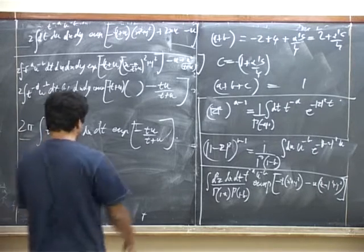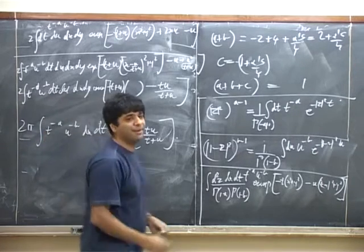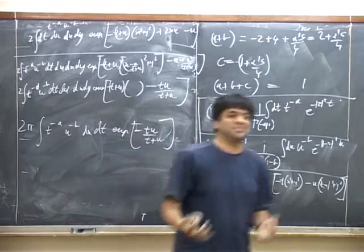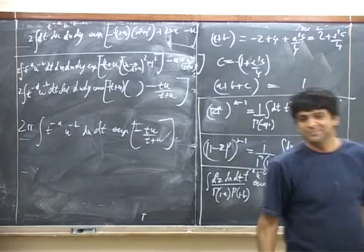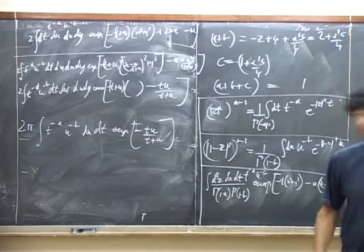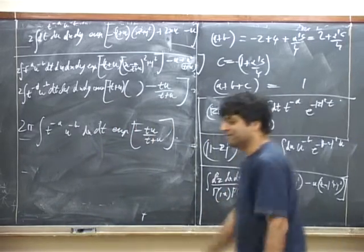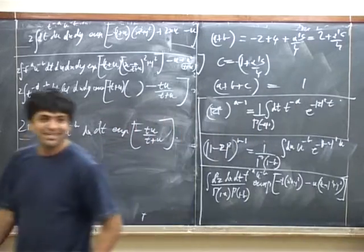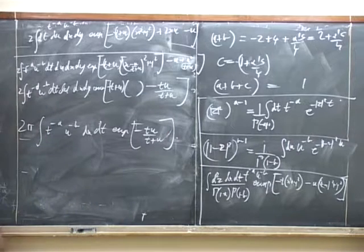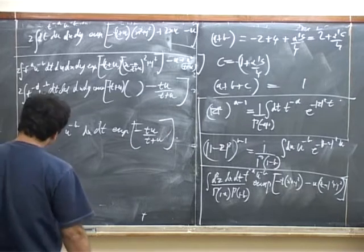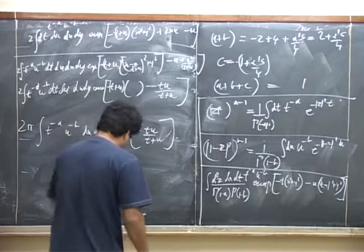So now the next step: we do the Gaussian integrals in x and y — that is the shifted x and y. So that gets rid of the x and y integrals, and we pick up a factor of square root pi the whole thing squared, so that's 2 pi. That gives us 2 pi times the integral of t to the power minus a, u to the power minus b, du dt, exponential of minus tu by t plus u.